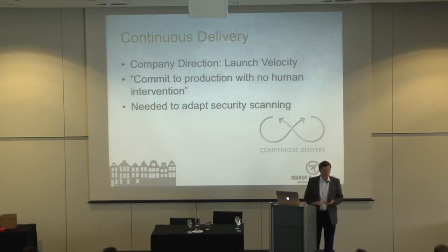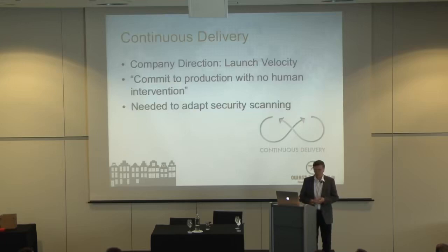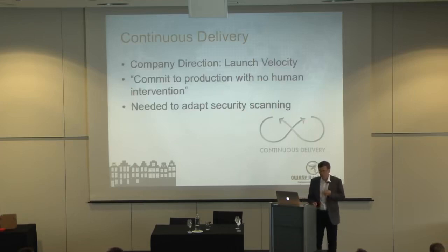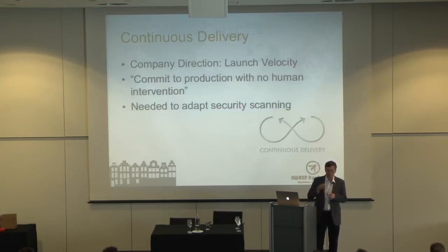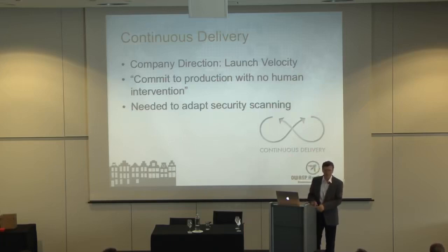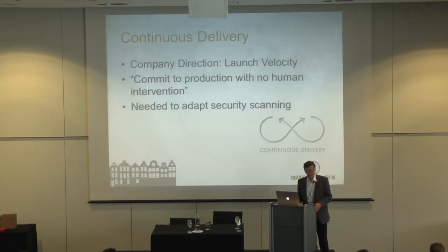And to talk about Griffin: the company also had the whole Yahoo chain direction, and the new direction was launch velocity and continuous delivery. Launch velocity's slogan is 'commit to production with no human intervention.' You're supposed to have so many tests and such coverage that you can commit to source code repository and then the build pipeline takes this commit, builds it, runs all the tests — unit tests, functional tests — puts it on staging, runs tests against staging, and if the tests pass it goes to the production service without any human intervention. Of course that presents challenges for security scanning.